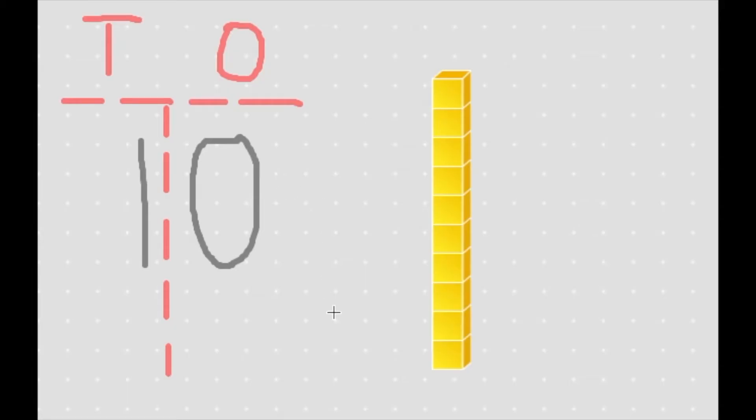So for the number 10 we can see that we have zero ones. There is zero in the ones place. There are no lone cubes sitting out here so there are zero ones. But there is one 10 and the long represents the one 10.